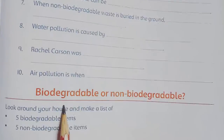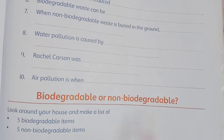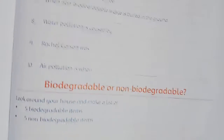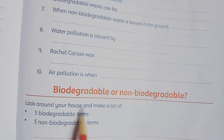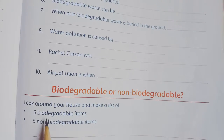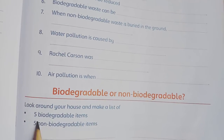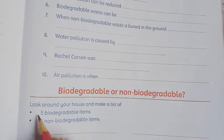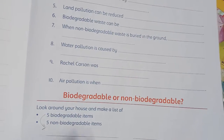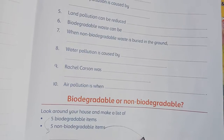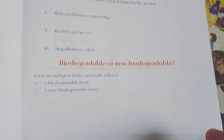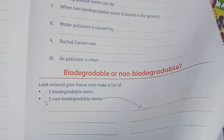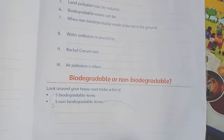Here is the task on biodegradable and non-biodegradable. You have to look around your house and make a list of five items that are biodegradable and five items that are non-biodegradable. You can take help from your family members or parents to make this list.